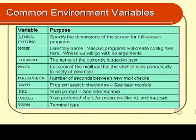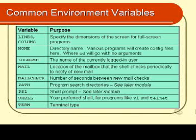The MAIL environment variable fully specifies the directory that contains the mailbox. The shell uses that environment variable to check the mailbox periodically to see if it's changed, and if it has, it puts out a warning on your screen saying you have new mail. The MAILCHECK environment variable is used by the shell to determine how many seconds should pass between checks on that mailbox.